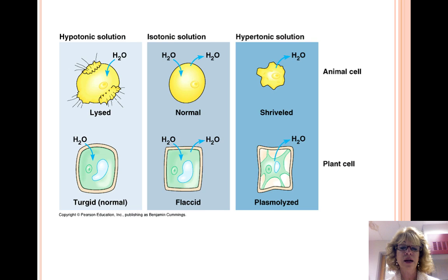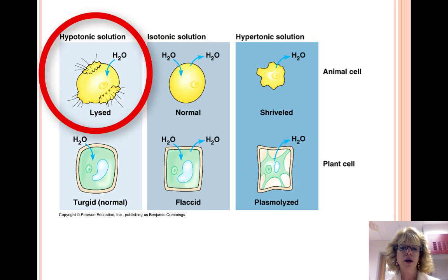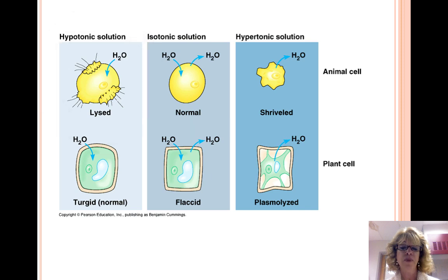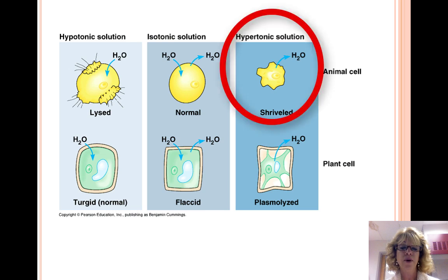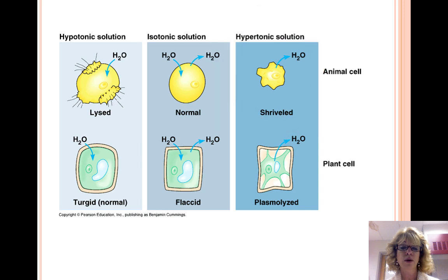If an animal cell is in a hypotonic solution with a lower solute concentration, water enters the cell and it swells up and may break, which is called lysis. Cells in a hypertonic solution, or a higher concentration, will shrivel and die from water loss.